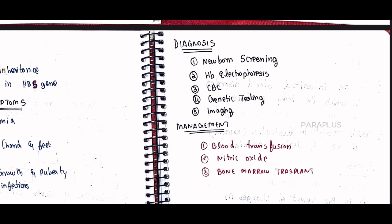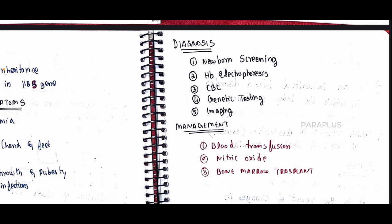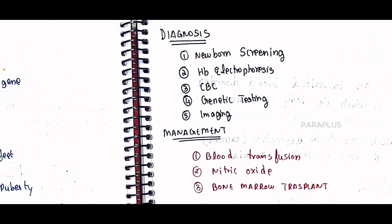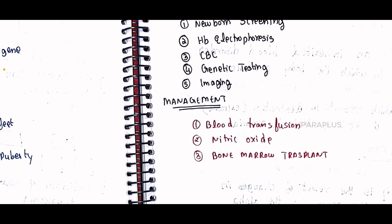For diagnosis of sickle cell anemia, you can do a newborn screening, complete blood count (CBC), hemoglobin electrophoresis, genetic testing, and imaging. For management, options include blood transfusion, bone marrow transplant to completely change the blood, use of nitric oxide to dilate blood vessels, and prevention of clot formation.